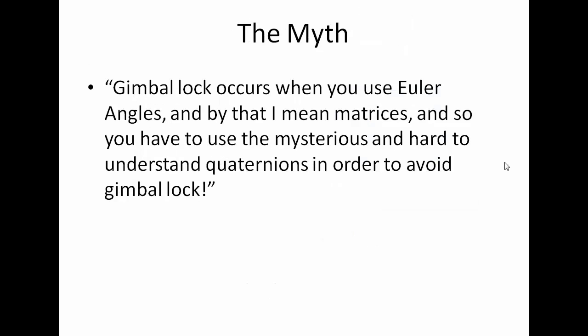The myth: gimbal lock occurs when you use Euler angles — matrices — and so you have to use the mysterious, hard-to-understand quaternions to avoid gimbal lock. I've heard this said over and over in the game programming world, and it's just not remotely true. I'm about to show the elusive quaternion gimbal lock — that you actually can have gimbal lock with quaternions — for the exact same reason you have it with matrices. The implication that matrices are bad because they cause gimbal lock is not true. The cause is not related to the matrices.